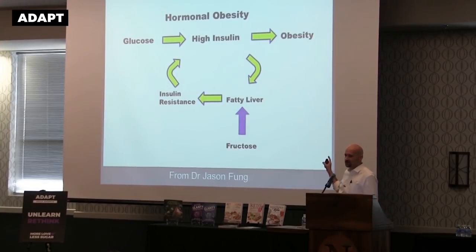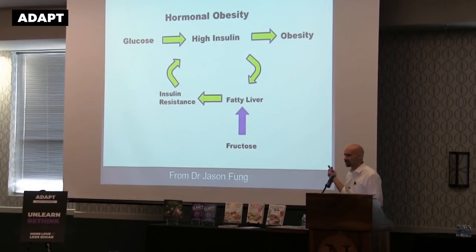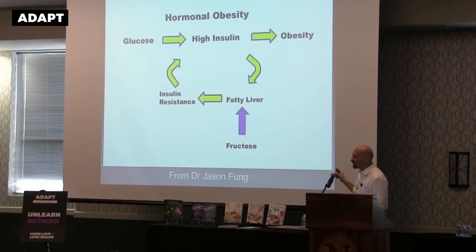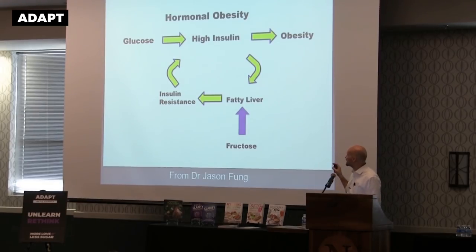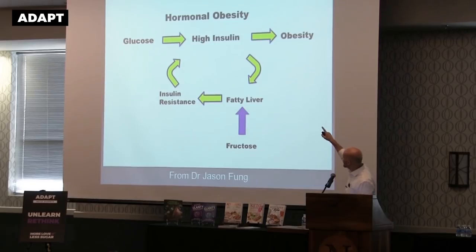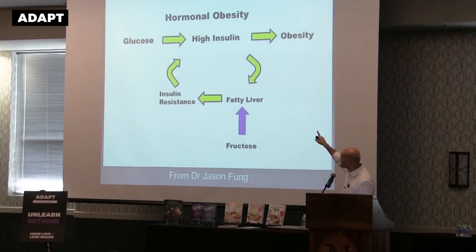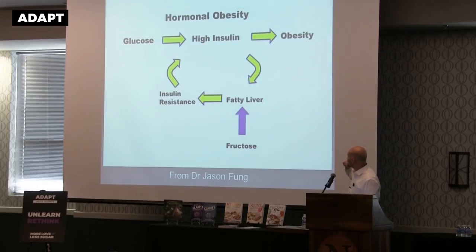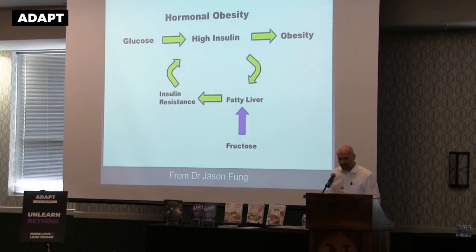The good news is you can reverse fatty liver, and you can do it pretty quickly. A keto diet is part of that, and fasting is a really quick way to address it. This shows the process of glucose increasing insulin, leading to obesity, with high insulin levels causing fatty liver and insulin resistance. That high insulin and insulin resistance feed each other. But fructose can go in directly and cause fatty liver — a double whammy. If you have high glucose and fructose, you're really on the fast track to bad metabolic disease.